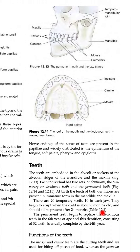जब 6 महीने का बच्चा हो जाता है, उसके बाद उनके teeth एक-एक करके आने शुरू हो जाते हैं। And should all be present after 24 months — that means जब वो 2 साल का हो जाता है, 2 साल की उम्र के बाद उसके पूरे temporary teeth आ जाते हैं।